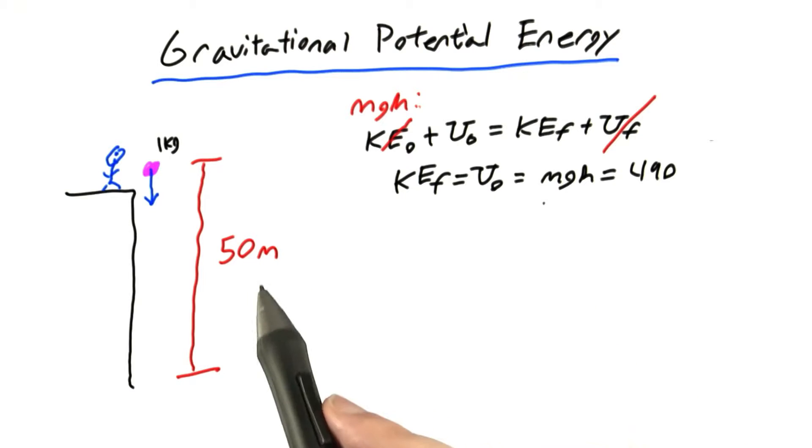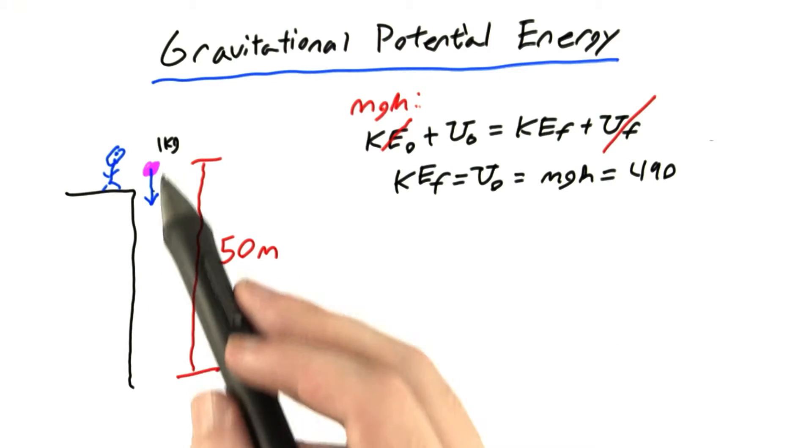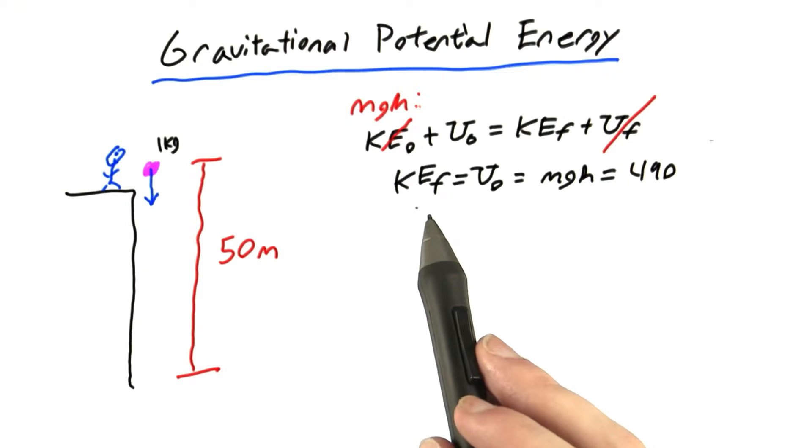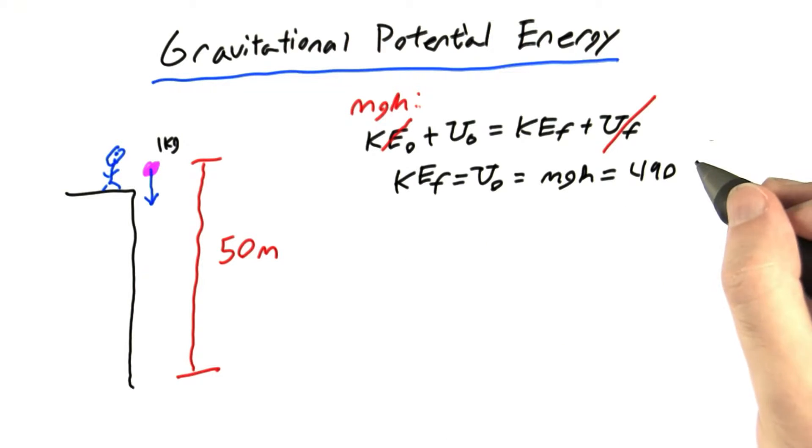Plugging in the values 50 meters, 9.8 meters per second squared, and 1 kilogram, we get that the final kinetic energy is 490 joules.